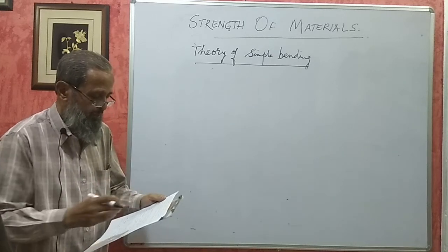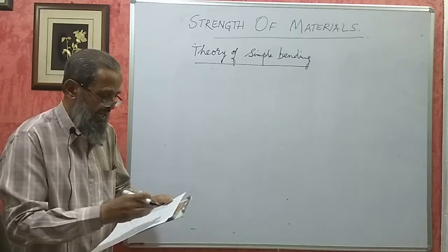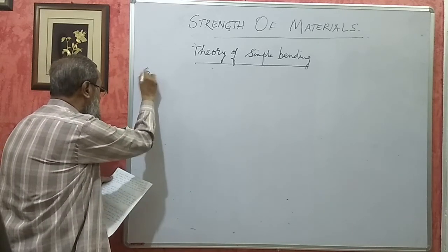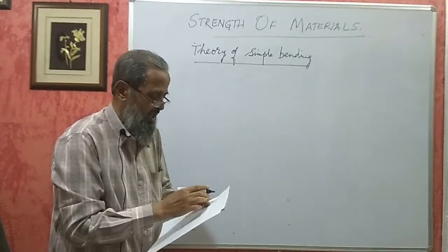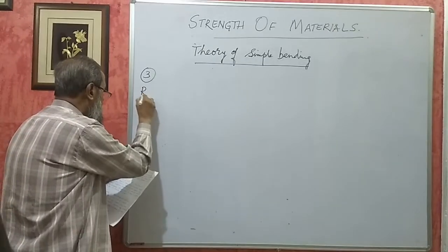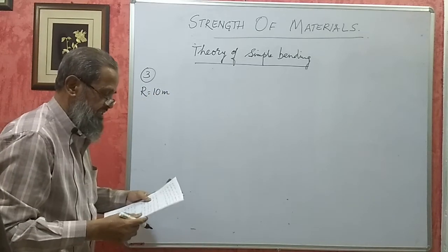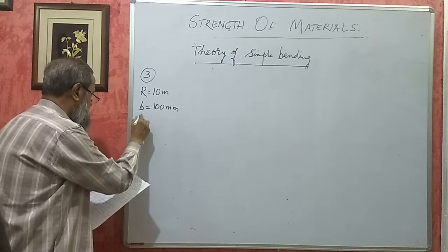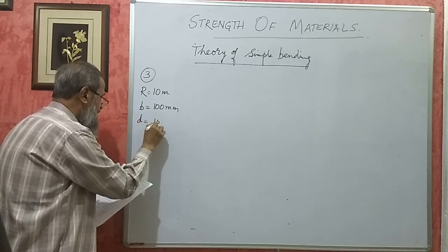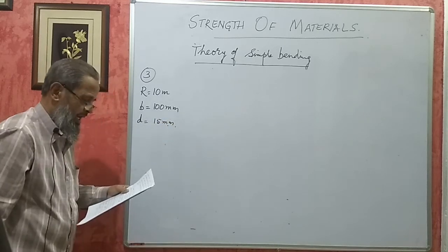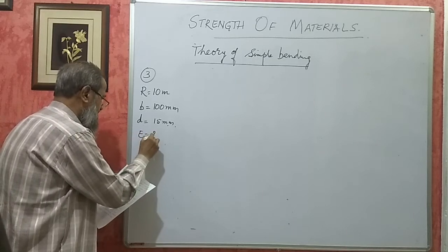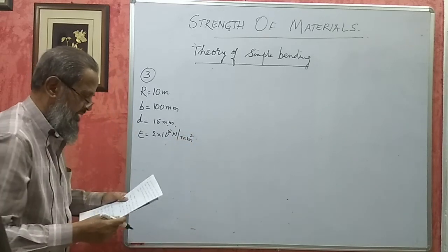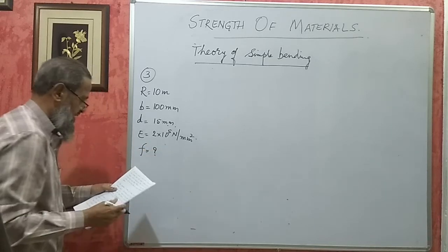Hello friends. We will take up a few problems from the model question bank on theory of simple bending and try to solve them. I have taken selected problem number 3. A steel plate is bent into a circular arc of radius 10 meters. The plate is 100 mm wide and 15 mm thick. Assuming the value of E, Young's modulus of elasticity, as 2×10⁵ N/mm², find the maximum stress induced in the plate.